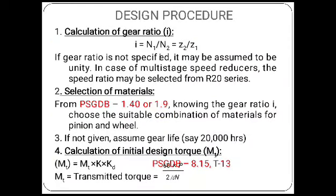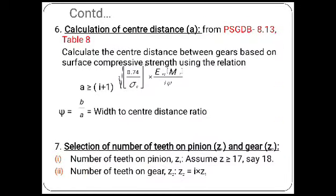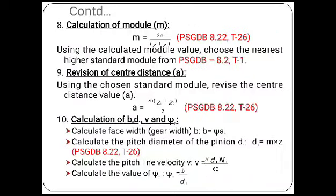Now we can see the design procedure for designing a spur gear. First, calculate the gear ratio — minimum speed divided by maximum speed. Then select the suitable material. Next, calculate the initial design torque. Then calculate the stresses related to the gear. Calculate the center distance. Then select the number of teeth on the pinion and gear. Finally, calculate the module and revise the center distance to get the exact value.